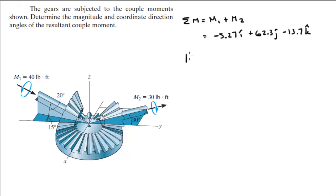Now, what you need to do, because they're asking you for the magnitude and the coordinate direction angles, is you need to find the magnitude. The magnitude is simply given by the X component squared plus the Y component squared plus the Z component squared. So 5.27 squared plus 62.3 squared plus 13.7 squared, all square rooted. You plug it into your calculator and it should be the nice neat number that is 64. So that's the magnitude.